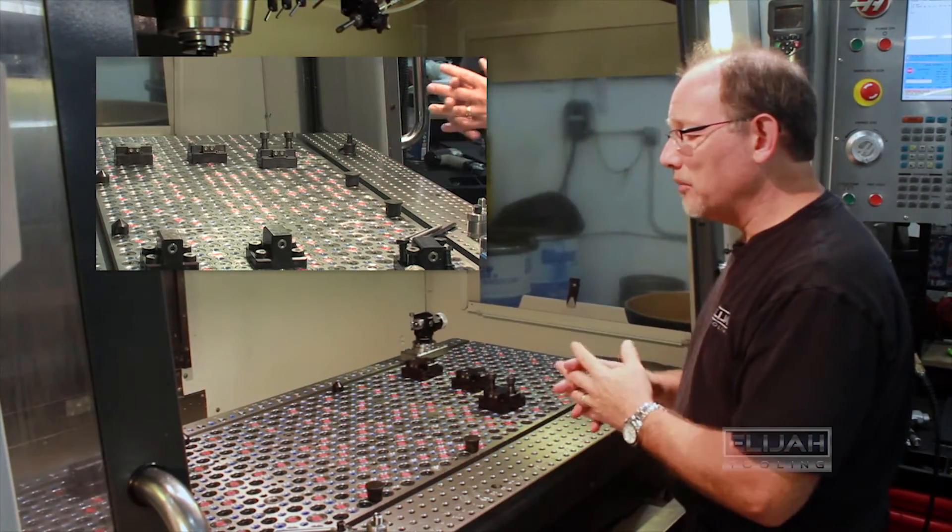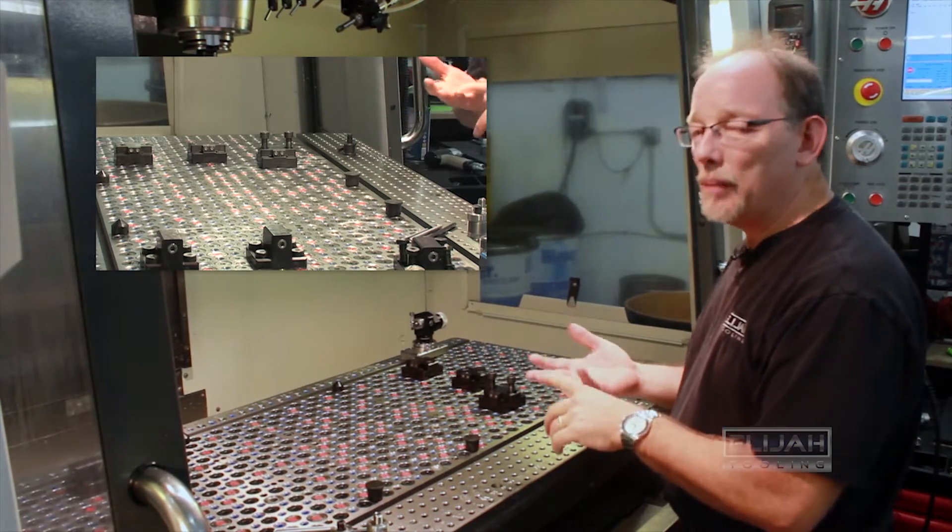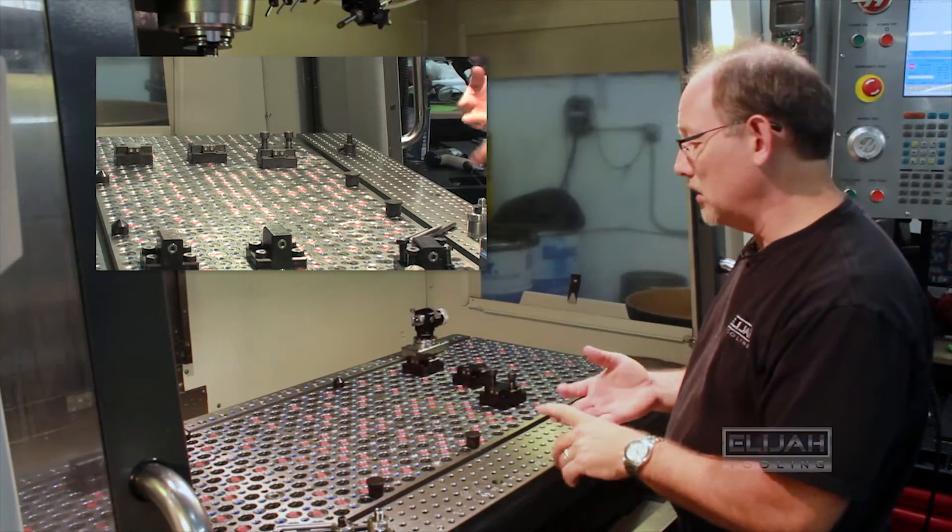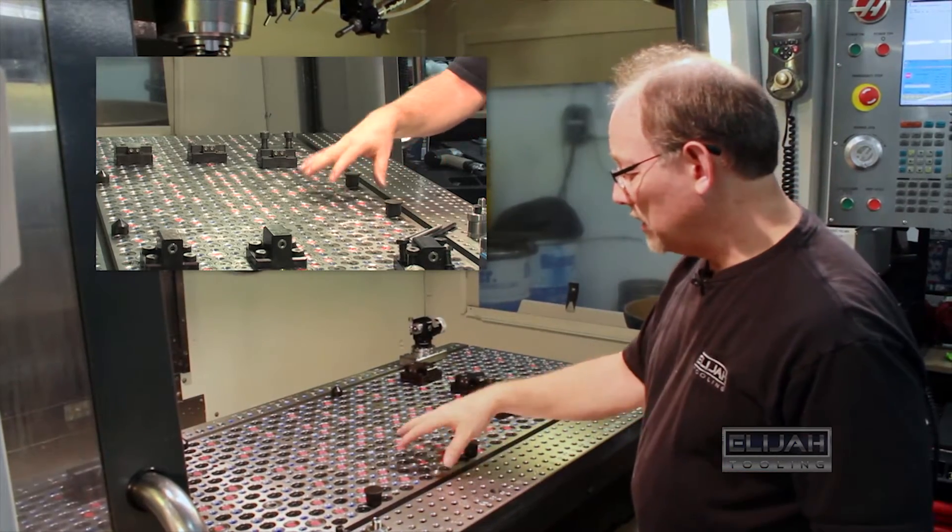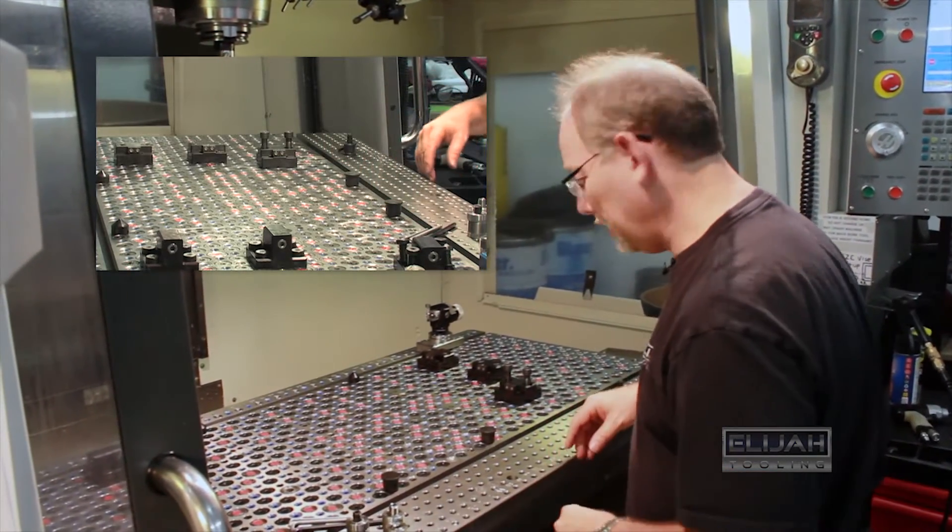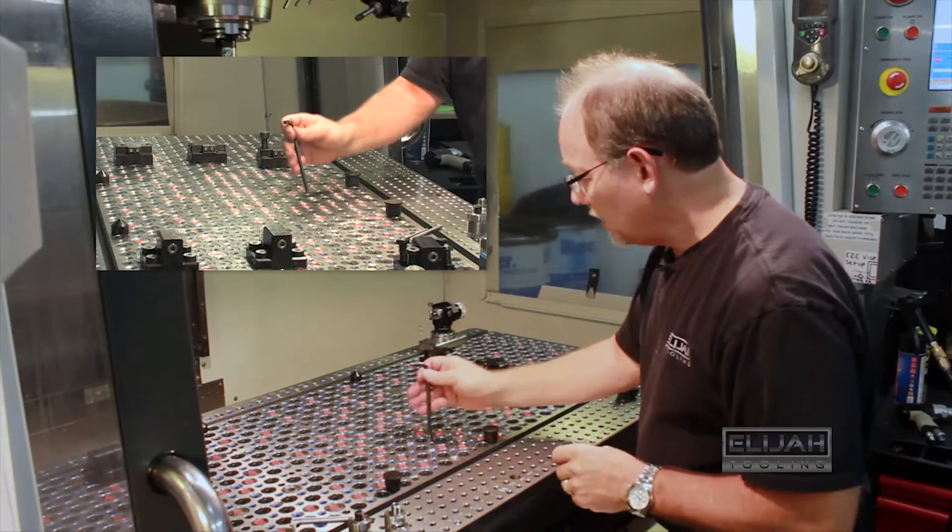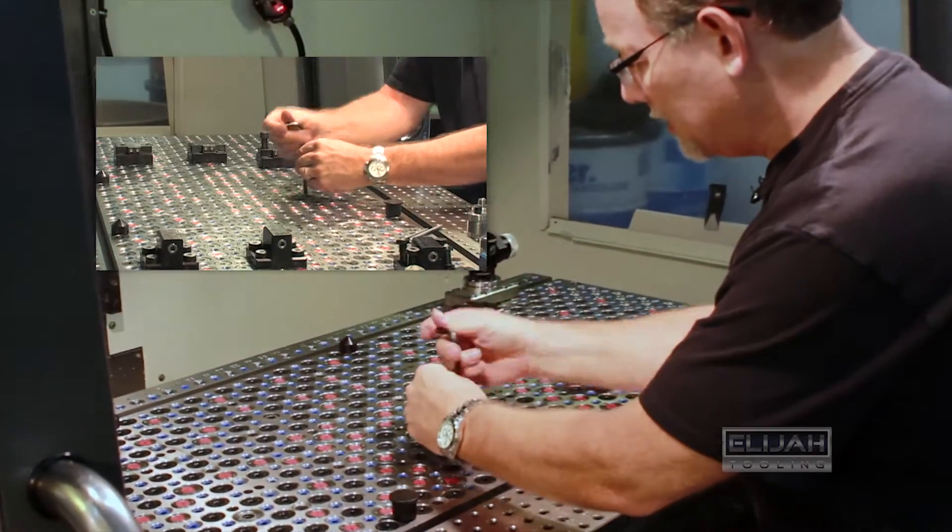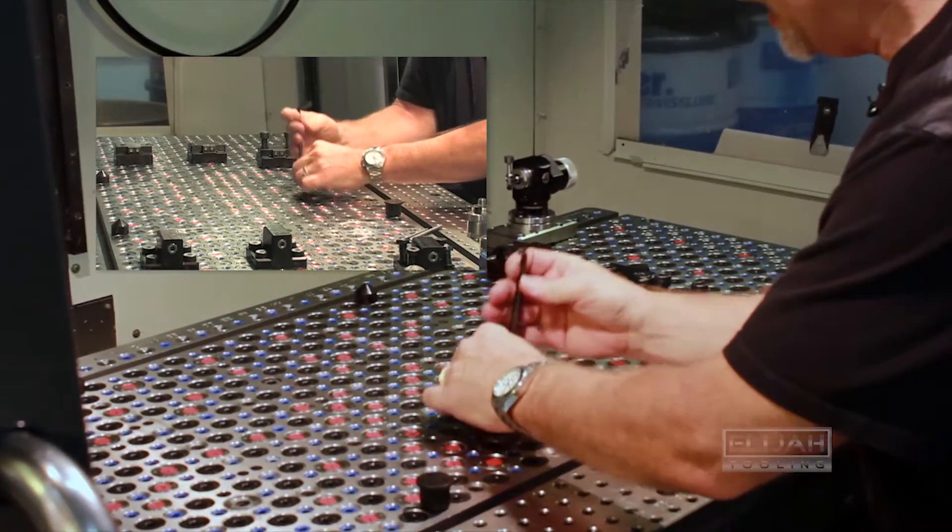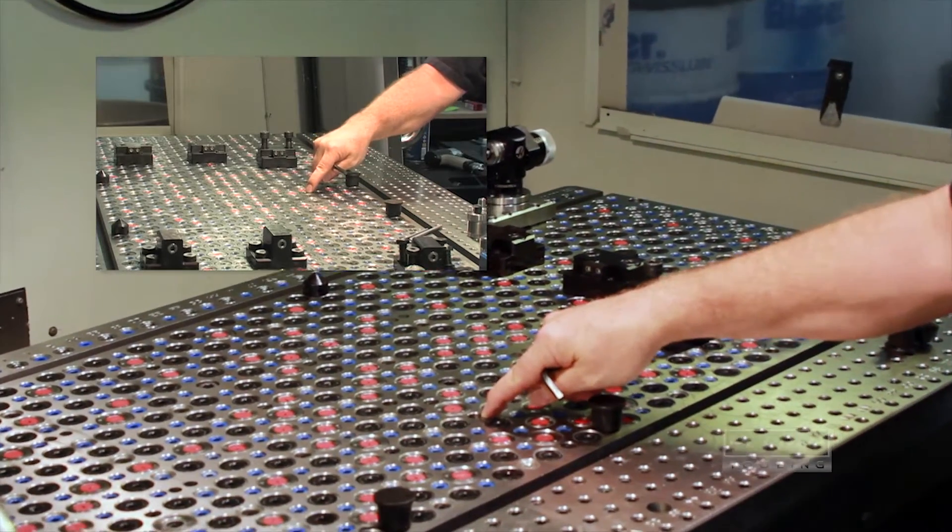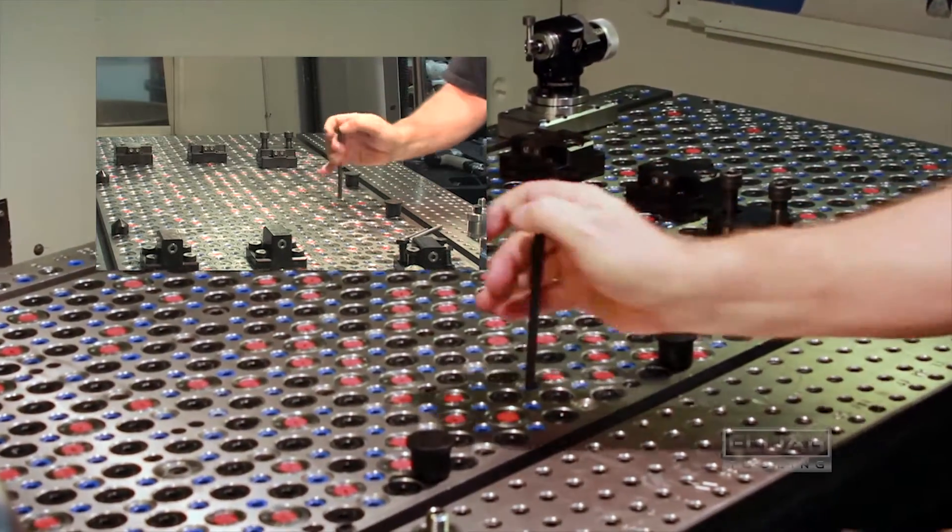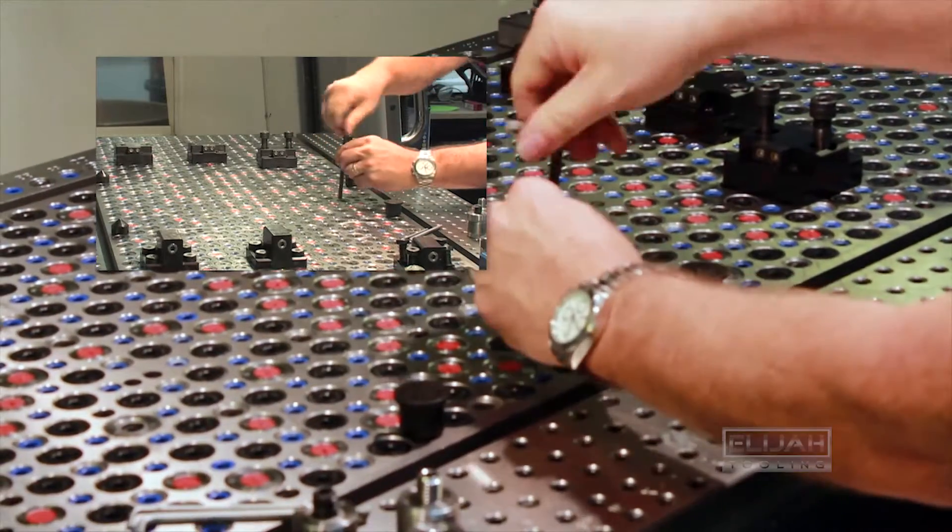The great thing about a modular fixture is that it performs a couple functions really well. One is it locates things. Let me get the right wrench out here. All these little blue plugs are actually plugging a hole that we call a multi-purpose hole, and in this particular fixture we've represented it in two different ways.